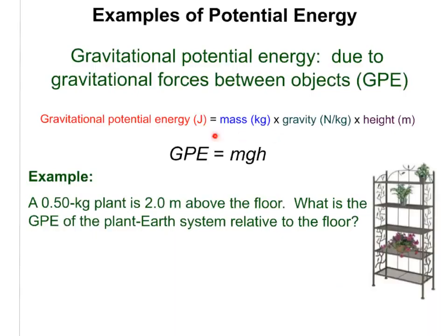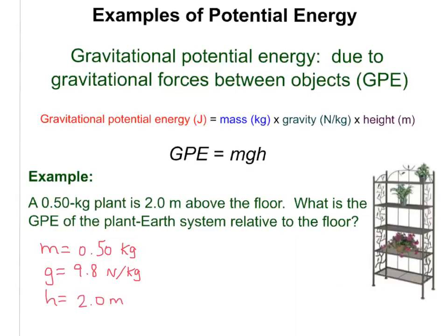Now let's do an example using the gravitational potential energy equation. GPE equals mass times g times height, where g equals 9.8 meters per second squared on Earth. Example: a 0.5 kilogram plant is 2 meters above the floor. What is the gravitational potential energy relative to the floor? We know mass = 0.50 kg, g = 9.8 N/kg, and height = 2.0 meters.